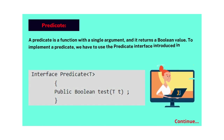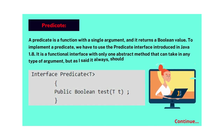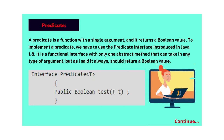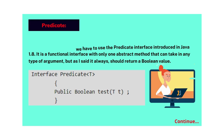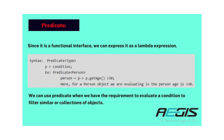The fourth feature is Predicate. A predicate is a function with a single argument that returns a boolean value. To implement a predicate, we use the Predicate interface introduced in Java 1.8. It is a functional interface with only one abstract method that can take any type of argument but always returns a boolean value. Since it is a functional interface, we can express it as a lambda expression. We can use predicate when we have a requirement to evaluate a condition to filter similar objects or collections.